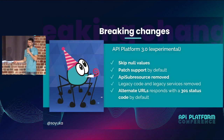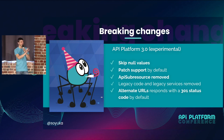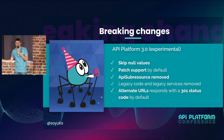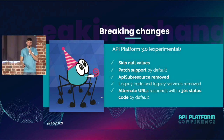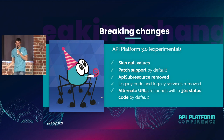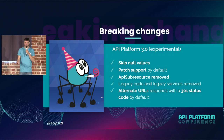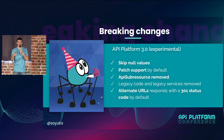About breaking changes in 3.0. First, the skip null value part will be default — this means that if you have a null value in your response or resource representation, it will not be shown anymore. You have PATCH support by default. We are removing the API sub-resource annotation and logic. We are removing all the legacy code and legacy services. And we are thinking about adding this feature where when you call a sub-resource, you get a 301 response code instead of a 200.